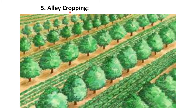Fifth is alley cropping. Alley cropping is planting rows of trees at wide spacing with a companion crop grown in the alley between the rows. Alley cropping can diversify farm income, improve crop protection, and provide conservation benefits to the crop. Example is silver oak and ragi.